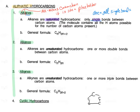With alkenes, we see a similar notation. The 'alk' stands for carbon chain, and the 'ene' is telling us that there is at least one double bond. So alkenes are unsaturated because they have at least one double bond between the carbons. And finally, when we look at alkynes, the start again begins with 'alk', which indicates it is a carbon chain, and then the 'yne' stands for a triple bond. This means alkynes are a type of unsaturated hydrocarbon that has at least one triple bond between the carbon atoms.